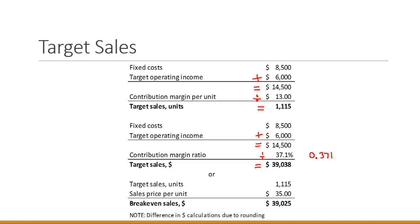We also have the shortcut: take target sales in units of 1,115 multiplied by the sales price per unit of $35 to arrive at target sales in dollars of $39,025. Again, there's a slight difference — $39,038 versus $39,025. They're the same calculation but not exactly equal due to rounding. The difference is minor and either value is an acceptable solution.